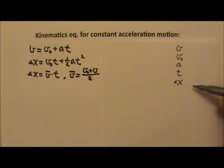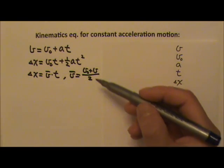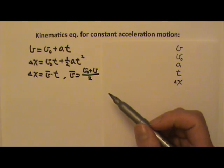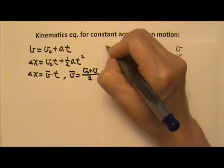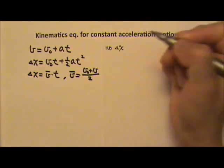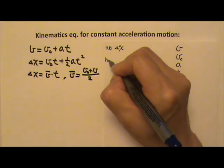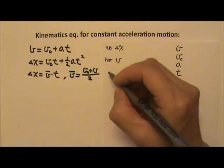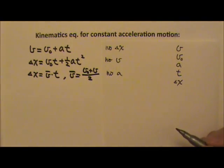Remember that there can be five quantities involved and there are four quantities in each equation, which means that one quantity is missing in each equation. This one does not have displacement delta x. This one does not have final velocity v. And this one here does not have acceleration a.